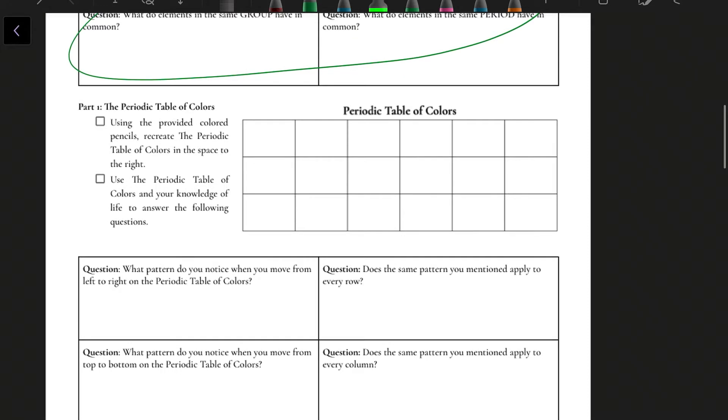Part one is the periodic table of colors. At your lab station, you will see a picture of the periodic table of colors along with some colored pencils, so you can color in exactly what you see there. Then these four questions are based on whatever you color in.